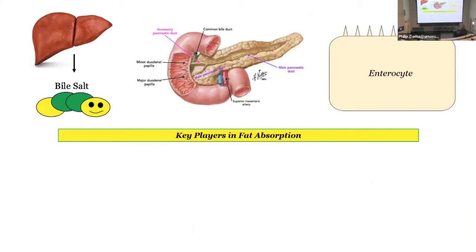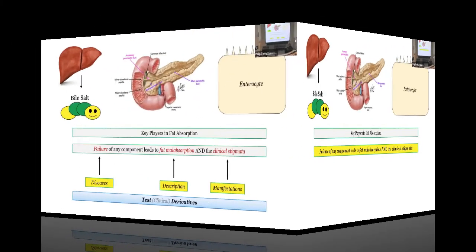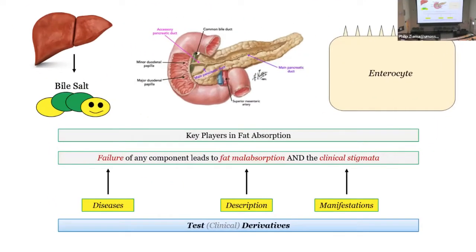We've already touched base on a lot of things — the liver making bile salts, pancreatic secretion, and enterocytes. These are the key components in fat absorption. Now you have to be familiar with the diseases — great test fodder — including the description of fat malabsorption, steatorrhea, and what are the clinical stigmata, the manifestations.